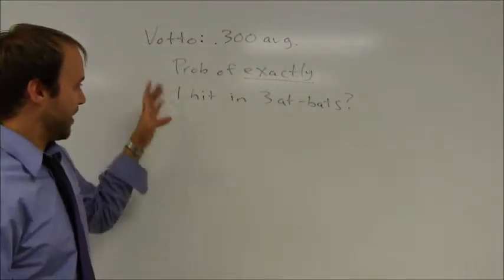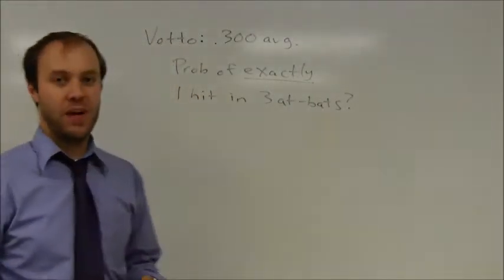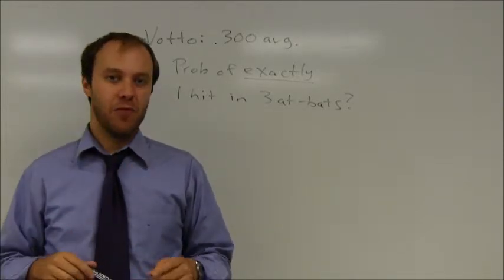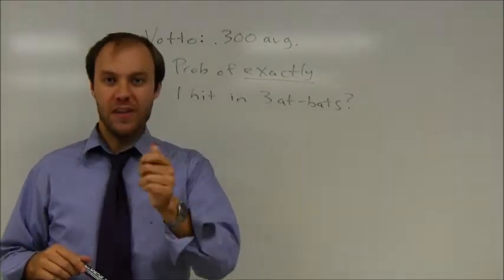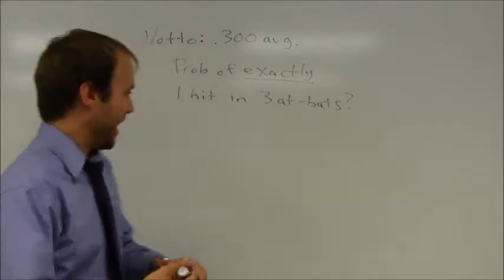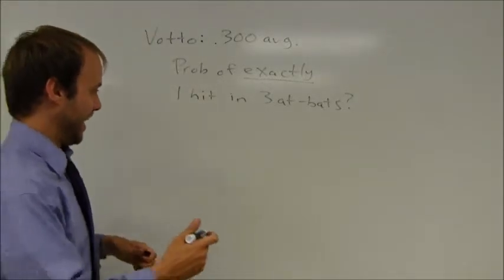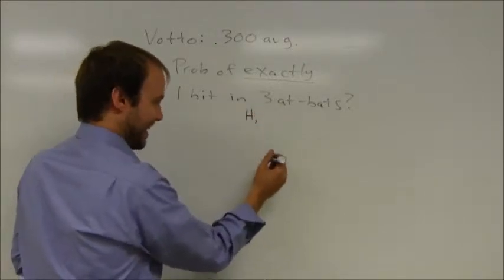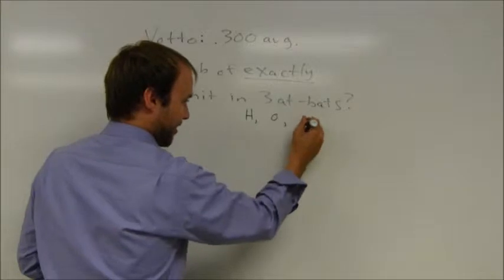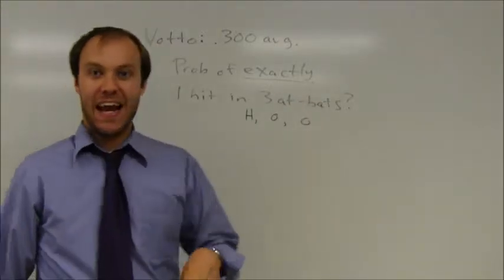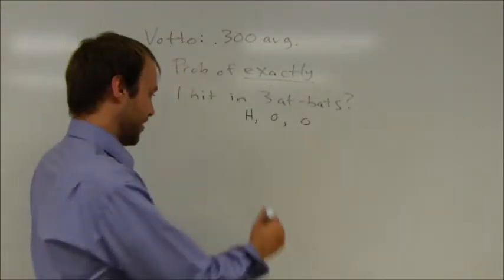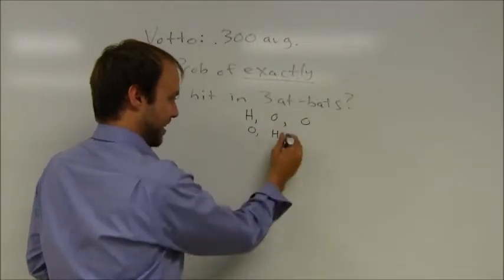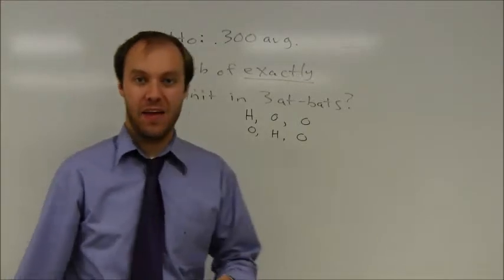If I want to find the probability of getting exactly one hit in three at-bats, once again I can break this down into pieces, but you have to be careful here about how you do this. Really there are three things that can happen. He could get a hit in the first at-bat and then he could get out and then he could get out. He could get out in the first at-bat and he could get a hit in the second at-bat and he could get out in the third at-bat.